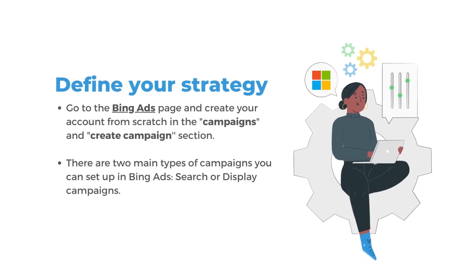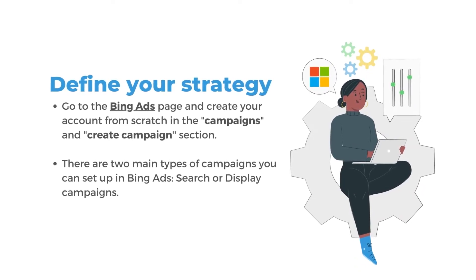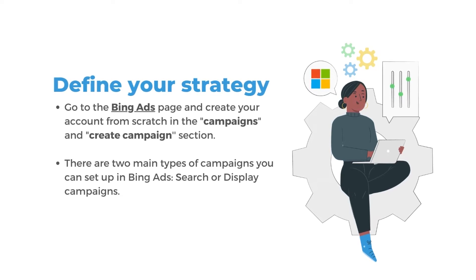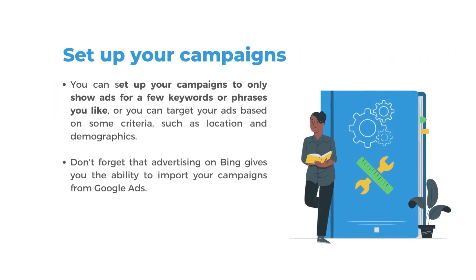Define your strategy. Go to the Bing Ads page and create your account from the strategy in the campaign and create campaign section. There are two main types of campaign you can set up in Bing Ads: search or display campaigns.